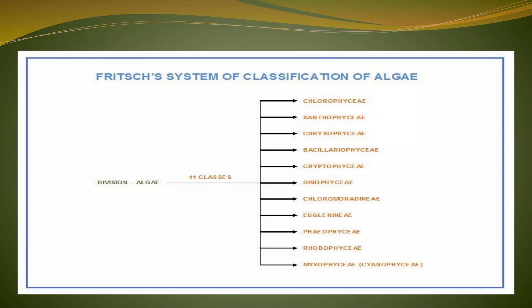This flow chart is for the system of classification of algae. There are 11 classes in the system. First: Chlorophyceae, Xanthophyceae, Chrysophyceae, Bacillariophyceae, Cryptophyceae, Dinophyceae, Chloromonadineae, Euglenineae, Phaeophyceae, Rhodophyceae, and Myxophyceae.